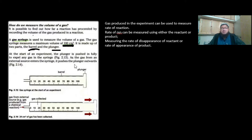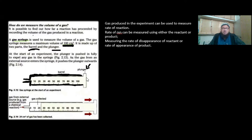The barrel is basically the fixed glass part of the syringe — though it can also be made of plastic — this fixed, immovable part is called a barrel. The second part, which I'm pointing to, is called a plunger. This plunger you can either pull out or push in. The movable part is called a plunger; the fixed part is called a barrel.